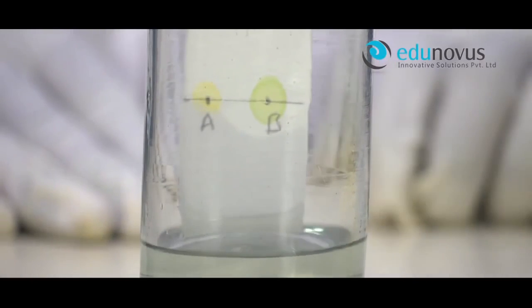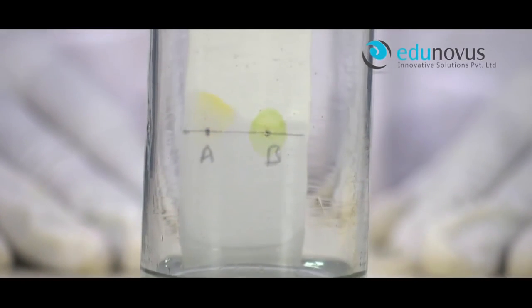Cover the jar with a rubber cork and keep it undisturbed. Notice the rising solvent along with the flower and leaf extract.